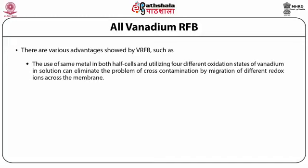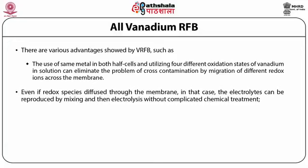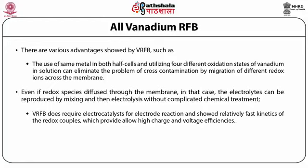There are various advantages of VRFB. First, the use of the same metal in both half cells utilizing four different oxidation states of vanadium in solution eliminates the problem of cross-contamination by migration of different redox ions across the membrane. Even if redox species diffuse through the membrane, the electrolytes can be reproduced by mixing and then electrolysis without complicated chemical treatment. Second, VRFB does not require electrocatalysts for electrode reactions and showed relatively fast kinetics of the redox couples, providing high charge and voltage efficiencies. An overall energy efficiency of about 70 to 90% has been observed with a 1 kW VRFB stack.